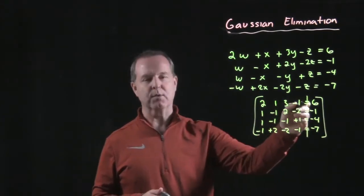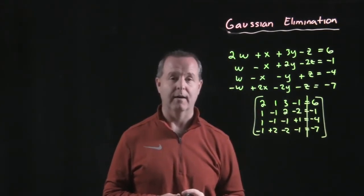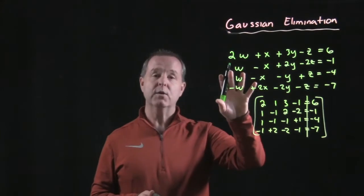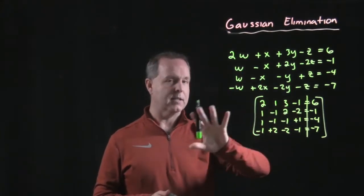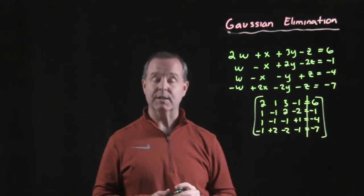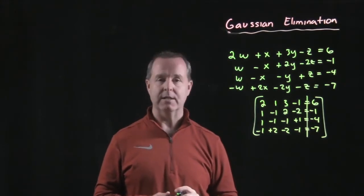All right, so for one mistake, I put equal signs rather than a bar through there. But what we can do then is now our process from here just becomes a slow, meticulous process to get it to row echelon form.